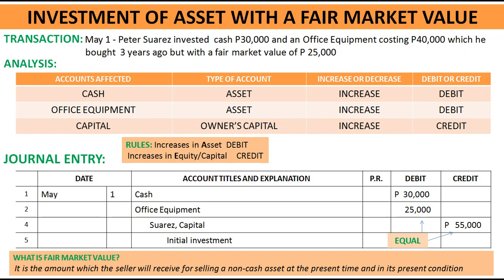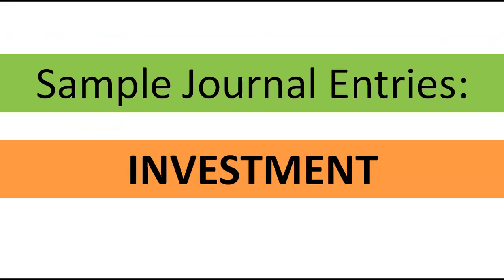Para mas madaling tandaan — mag-analyze mo na ng transactions at laging tatandaan ang rules ng debit and credit. Ang nakakalito lang talaga is when you don't know the effect of the transaction on the accounts. So very important that you are familiar with the accounts, you can classify what type of account it is, you know the effect — increase or decrease — and you know the rules on debit and credit. Next na mga videos, more tayo sa mga journal entries — examples ng iba't-ibang cases or transactions. Hopefully, naintindihan ninyo. Thank you and God bless.